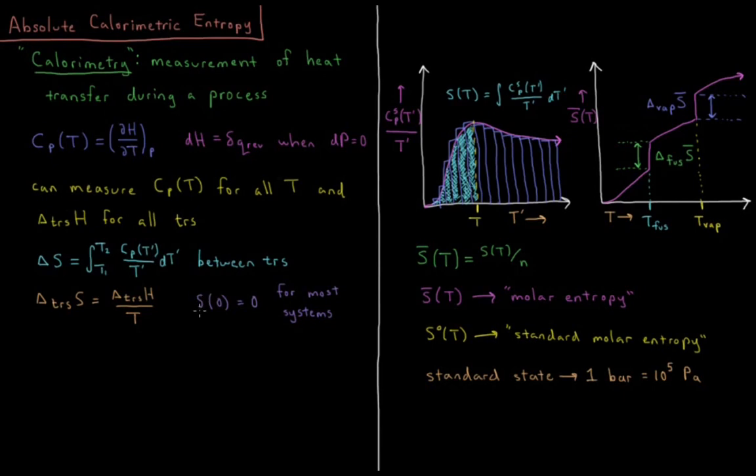According to the third law of thermodynamics, the entropy of a perfect crystal at zero Kelvin is equal to zero. For most systems, they have a ground state that only has one single state at the lowest possible energy, so for that perfect crystal we have an entropy of zero at zero Kelvin.